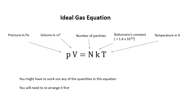In pV = NkT: p is the pressure, V is the volume, N (big N) is the number of particles, k is Boltzmann's constant — a very small number, 1.4 times 10 to the minus 23 — and T is the temperature in Kelvin. This equation describes the relationship between pressure, volume, and temperature for an ideal gas. You may need to rearrange it to find p, N, or T.